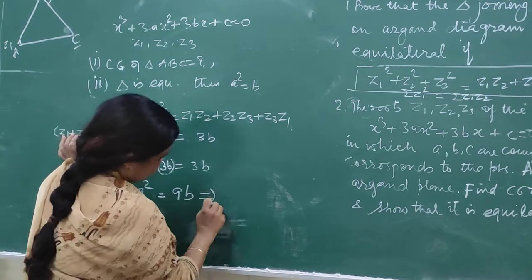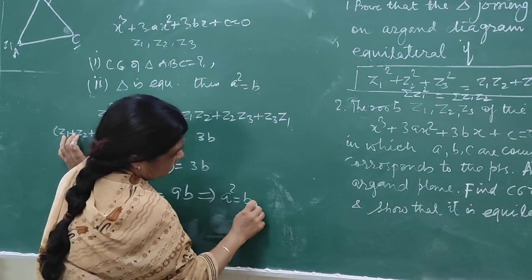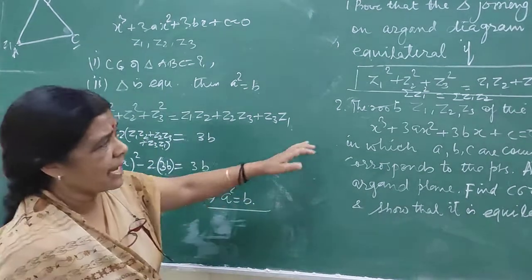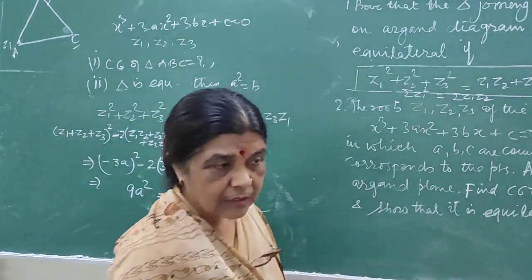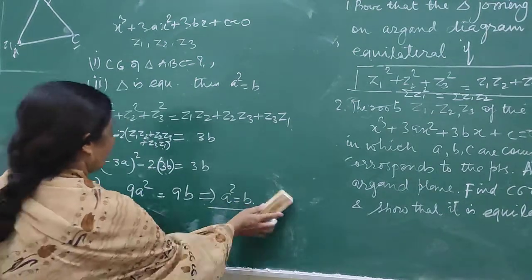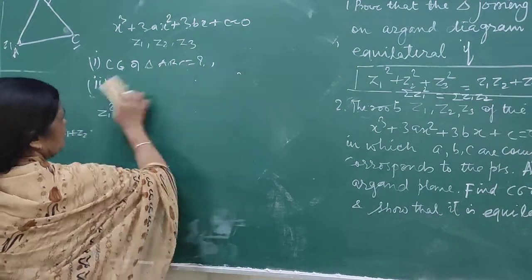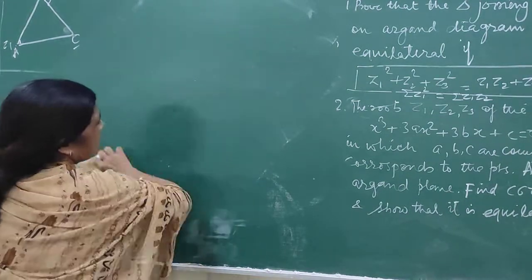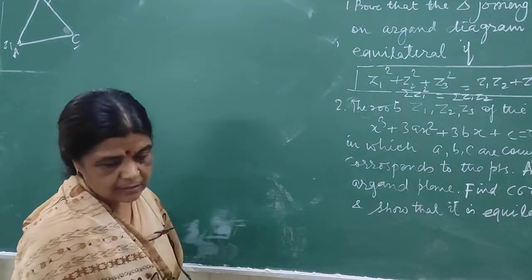This gives us 9a² minus 6b equals 3b, which implies 9a² equals 9b, and therefore a² equals b. This is the condition we derived. We can use this easily for equilateral triangle findings.